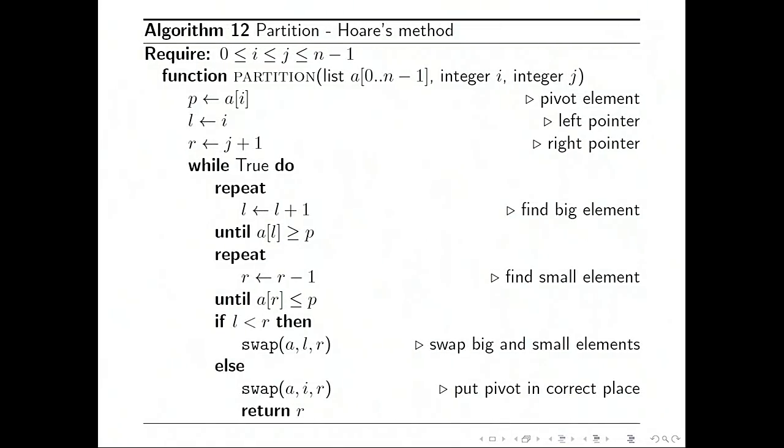So here's some pseudocode for Hoare's partition method. We take a list of size n and indices i and j pointing into the list. We're going to partition the sublist.